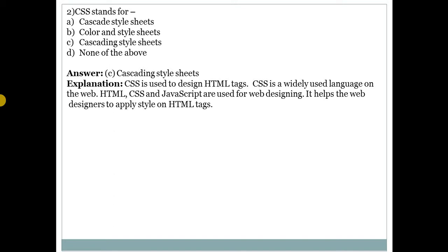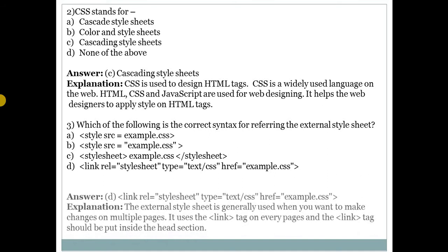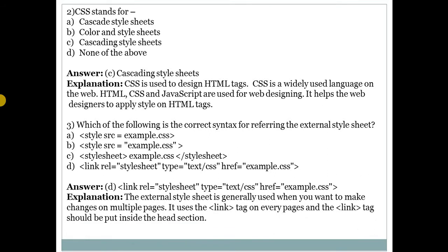Third question: which of the following is the correct syntax for referring to an external style sheet? Answer is D — the link element with attributes: rel="stylesheet", type="text/css", and href="example.css". This line of code adds an external CSS file named example.css.